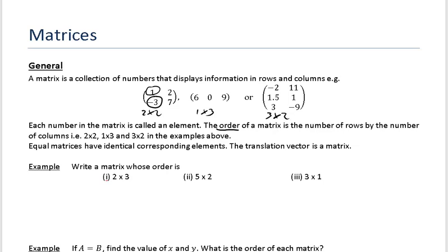And the translation vector is a matrix. So if you remember from your translations from your normal GCSE mathematics, if you had a translation of 3, 2, what that would do would move the thing 3 to the right and it would move it 2 up. And this is a matrix as well.